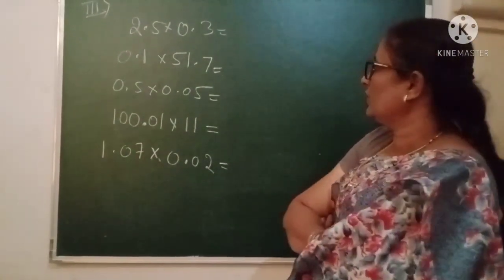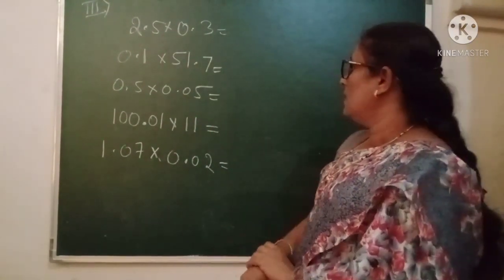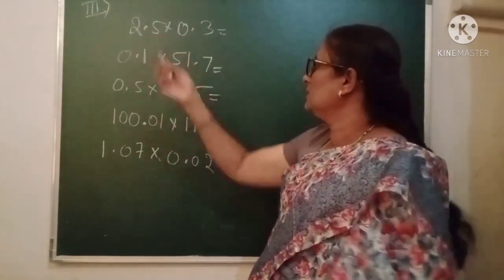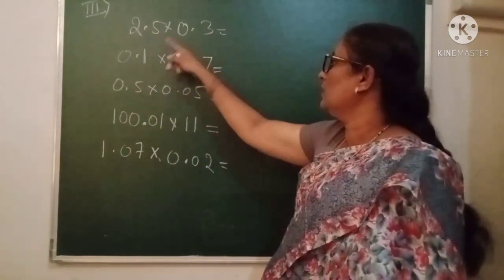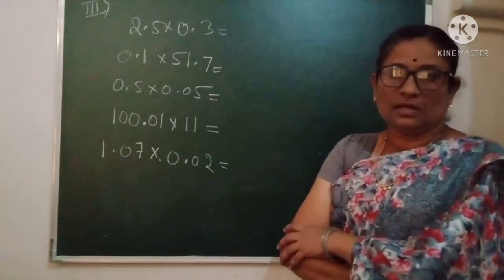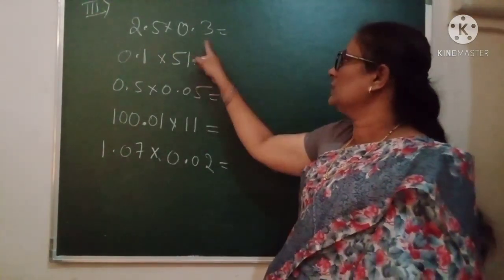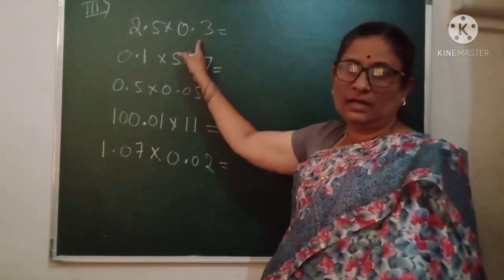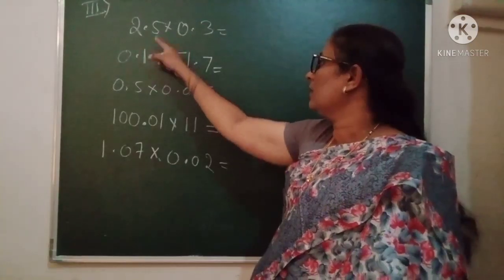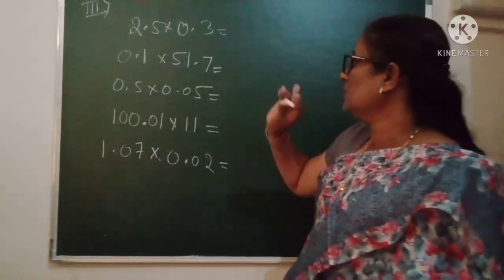Often you find a situation where you have to multiply decimal numbers. When the decimal point is there, how to multiply? We prefer direct multiplication. Today I am teaching in this session how we can do this multiplication directly and solve it without confusion related to the decimal point.